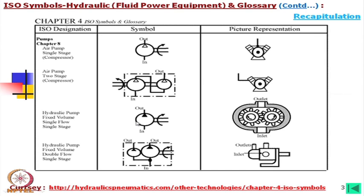This is a rotary hydraulic pump with fixed displacement. This is a double pump on a single shaft — both pumps are operated, one is of low flow and one is of high flow. Such pumps are used for energy saving: at high flow and low pressure both pumps work, and at relatively low flow and high pressure, only one pump operates.